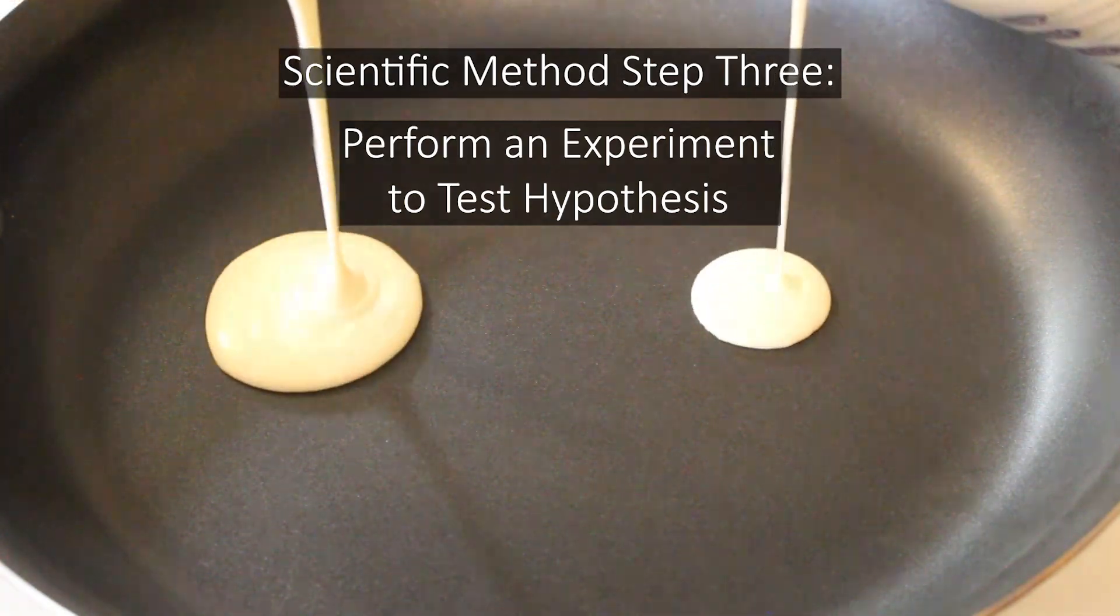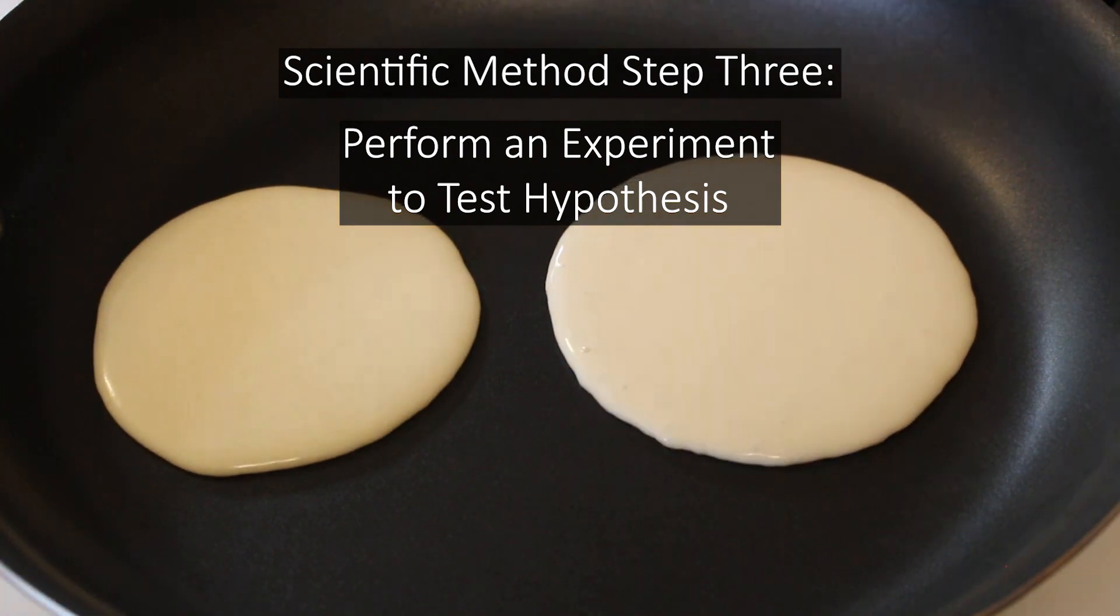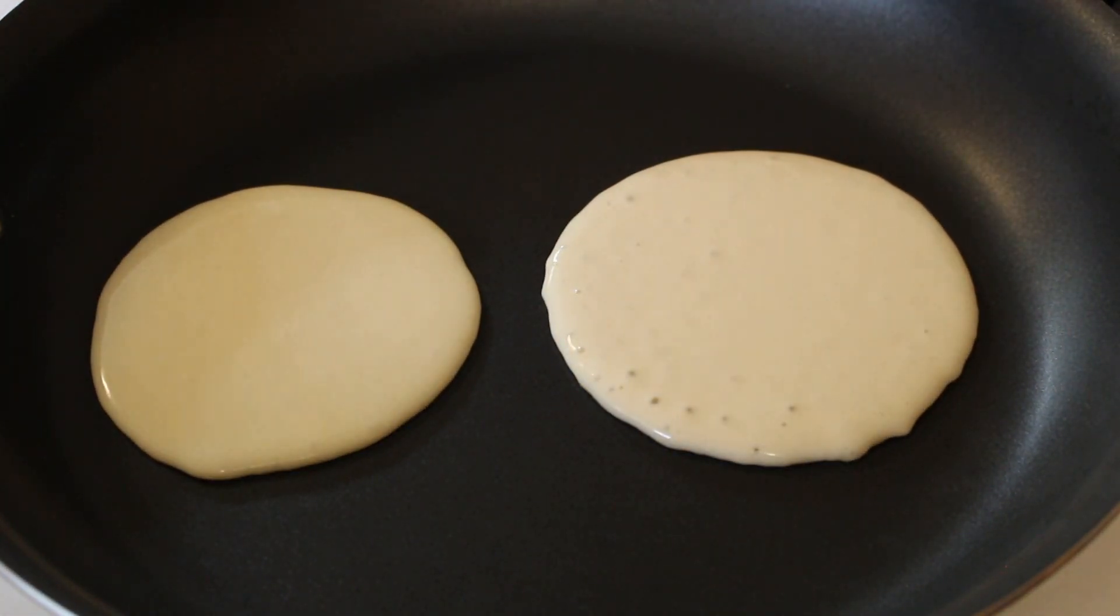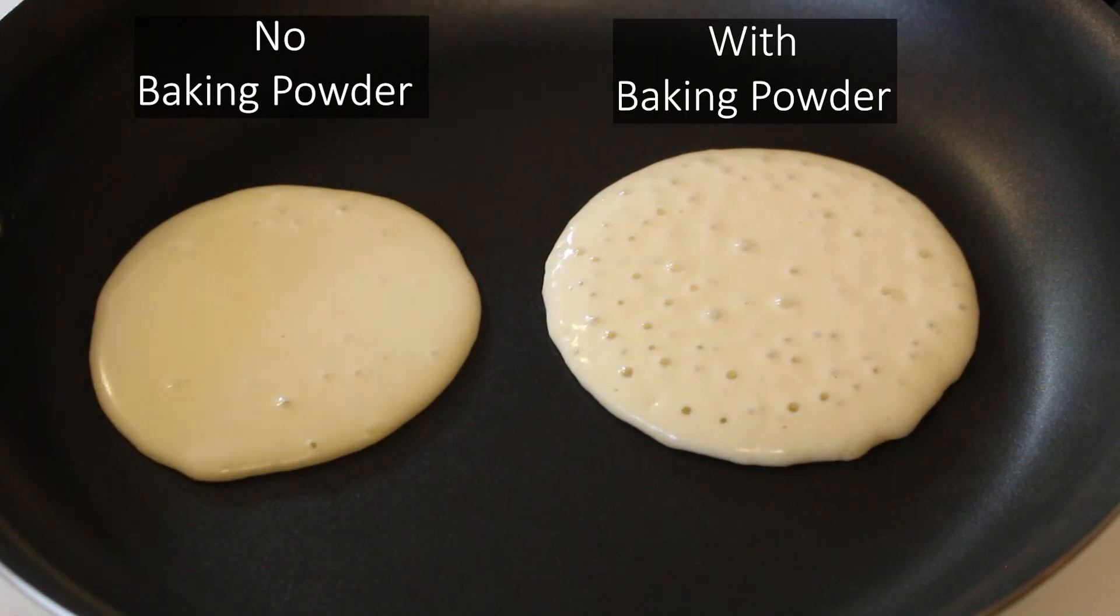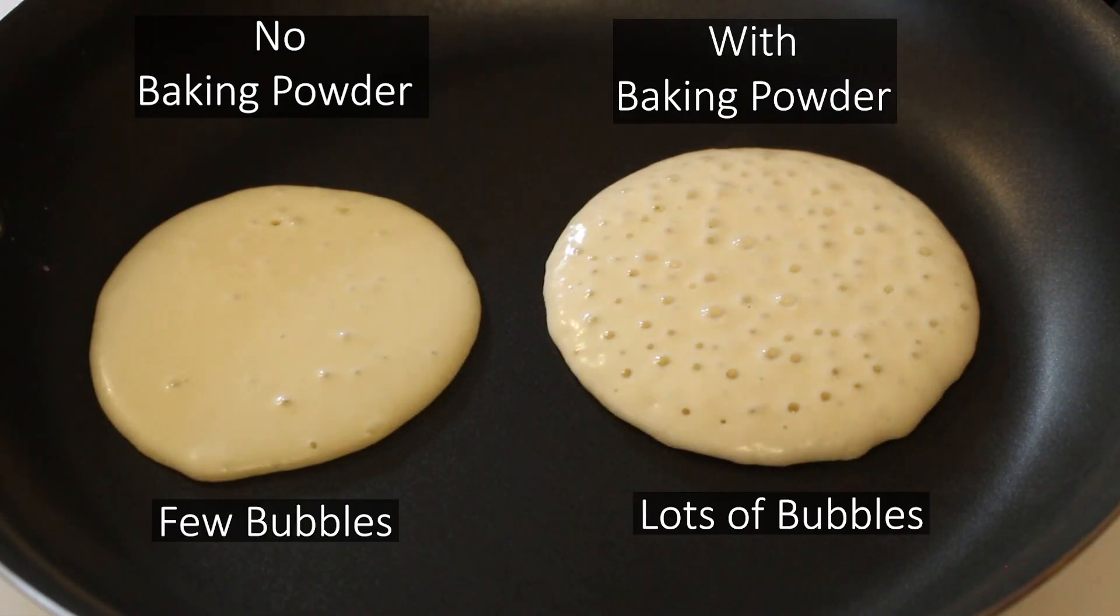The next step is to perform an experiment to test your hypothesis. For our experiment, we would make a batch of pancakes without baking powder and compare the results to a batch made with it. If you're curious what that looks like, just see for yourself.